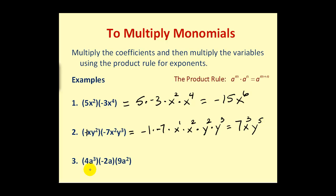Nothing changes when we have three monomials multiplied together. If you do this for a while, you'll probably skip the intermediate step and just multiply the coefficients directly. 4 times -2 would be -8, and -8 times 9 equals -72. Then A³ times A¹ times A² equals A⁶.